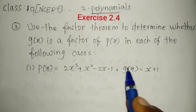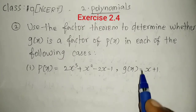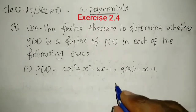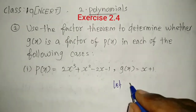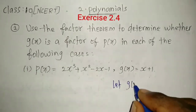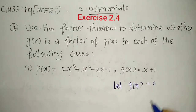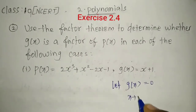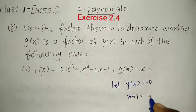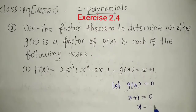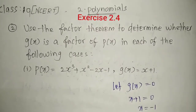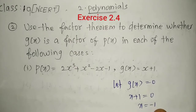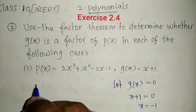They asked us to check whether the given g of x is a factor of p of x. First, you have to take g of x equal to 0, then only you will get the value of x. g of x is x plus 1, which equals 0, so x equals minus 1. Now substitute this x value into the given p of x.